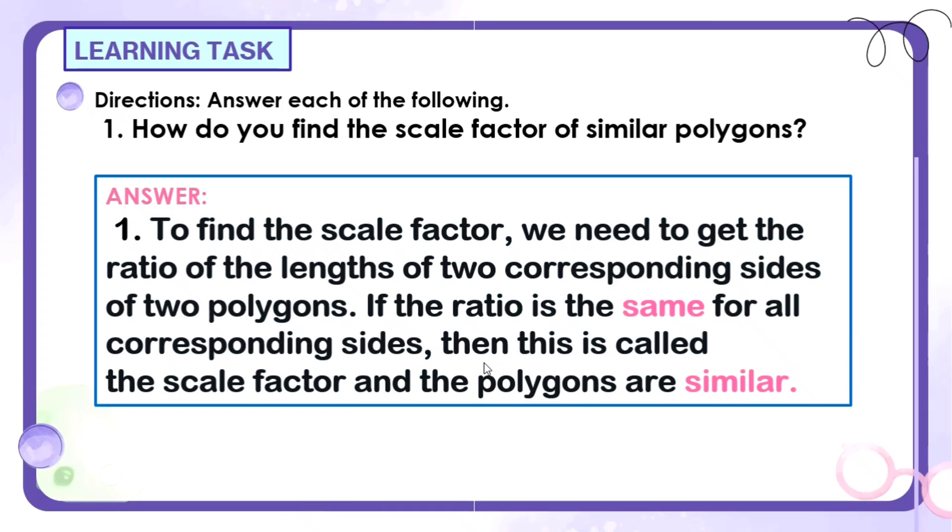Nakukuha ang scale factor sa ratio ng mga corresponding sides. Kapag ang ratio ng corresponding sides ay equal sa other corresponding sides ng ating polygons, we can say that they are similar. Kailangan pare-pareho sila ng ratio or scale factor. At sa scale factor, there are times na kailangan mong lowest term if in case na fraction siya. Kailangan mong lowest term para makita mo talaga kung same sila ng scale factor.